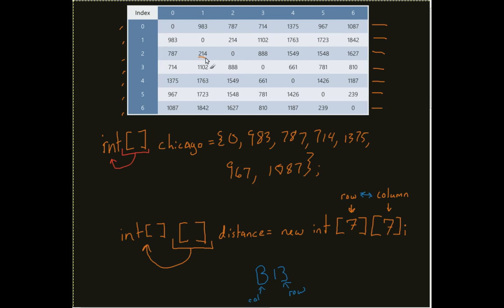Now say, for example, this guy, this 214 right here—I want to store that one. So row two, column one. What I would do is come in and state—let me scroll down a little bit—